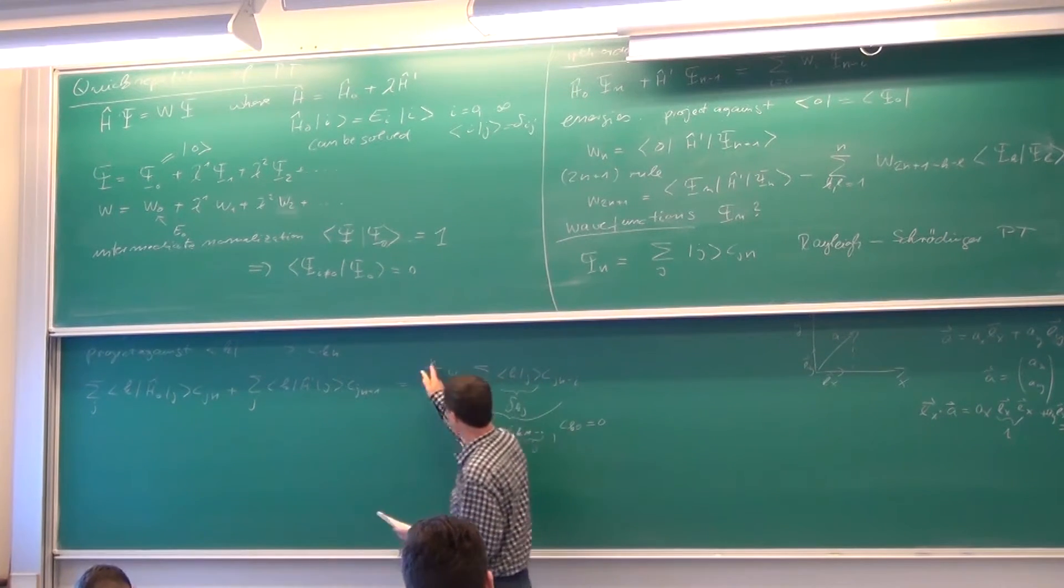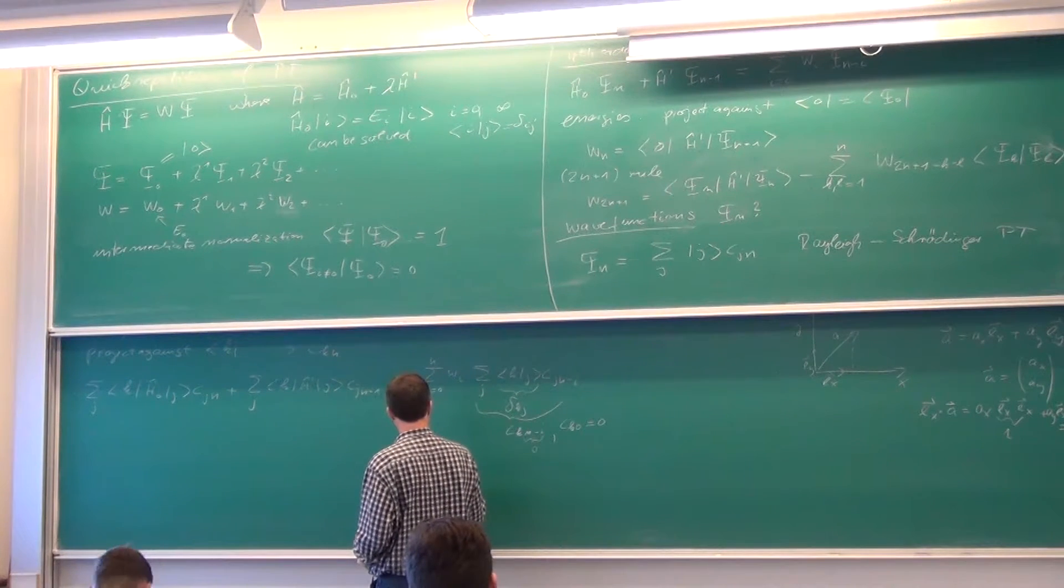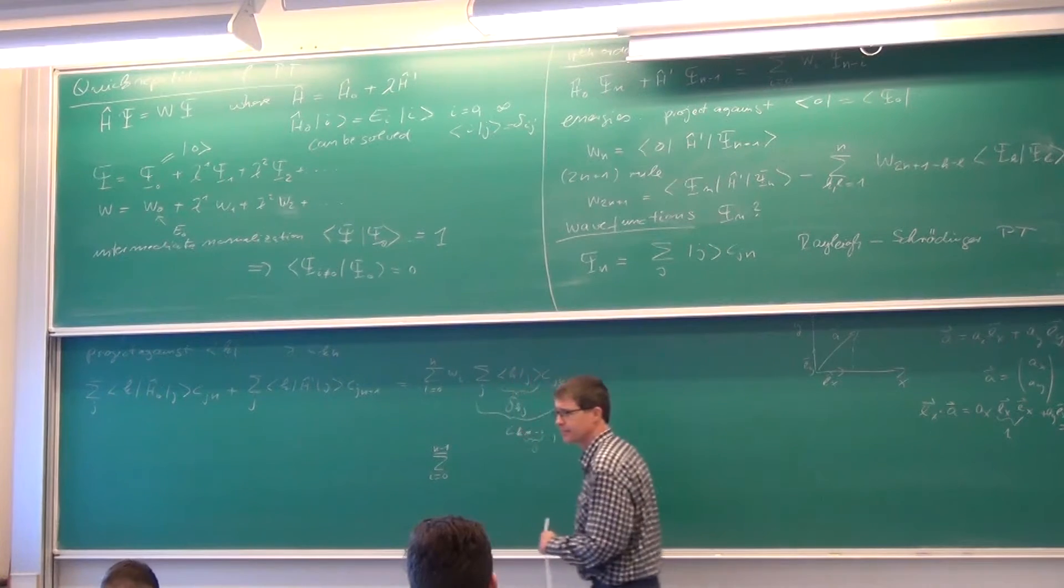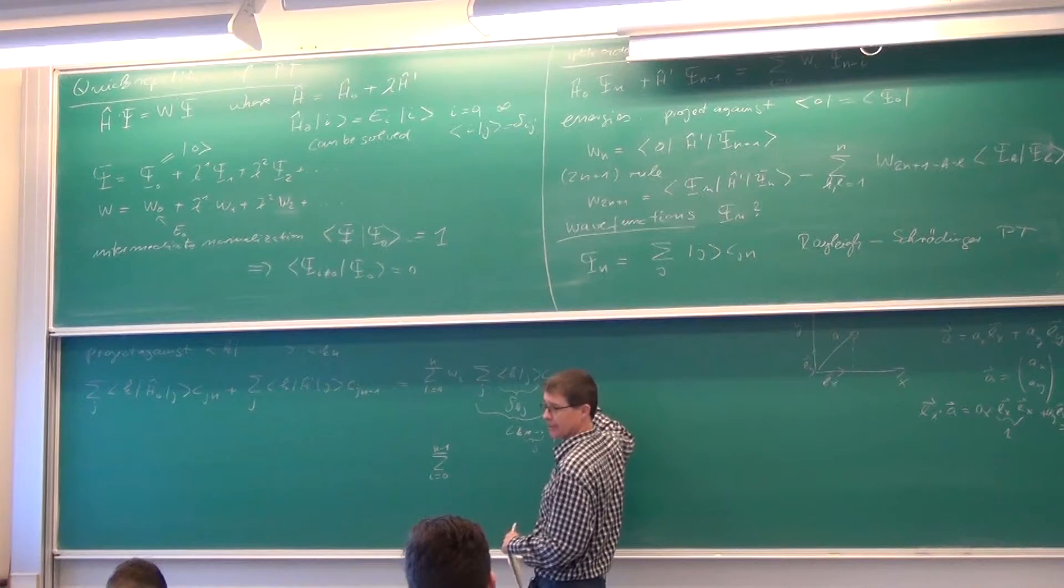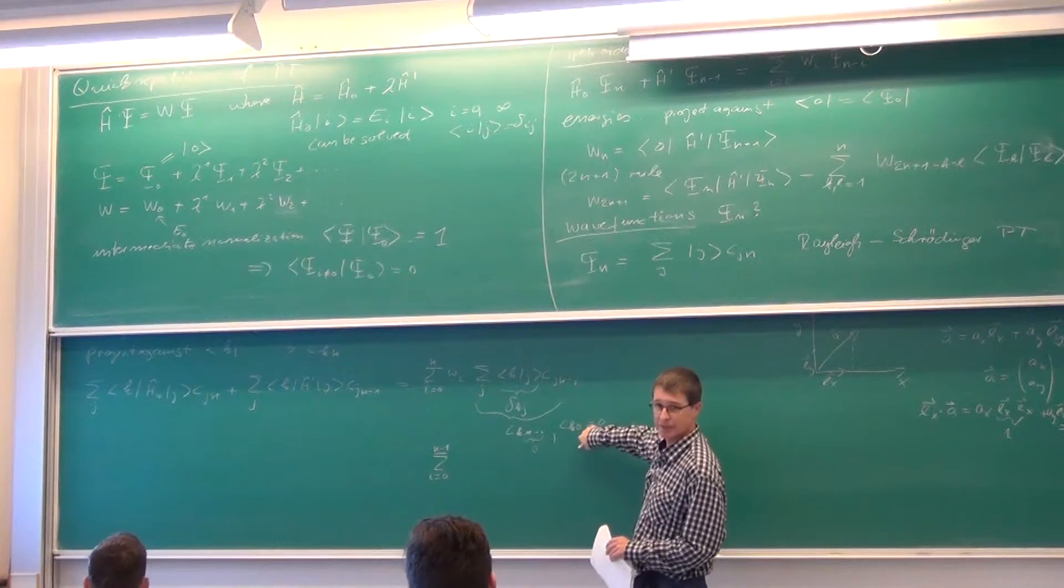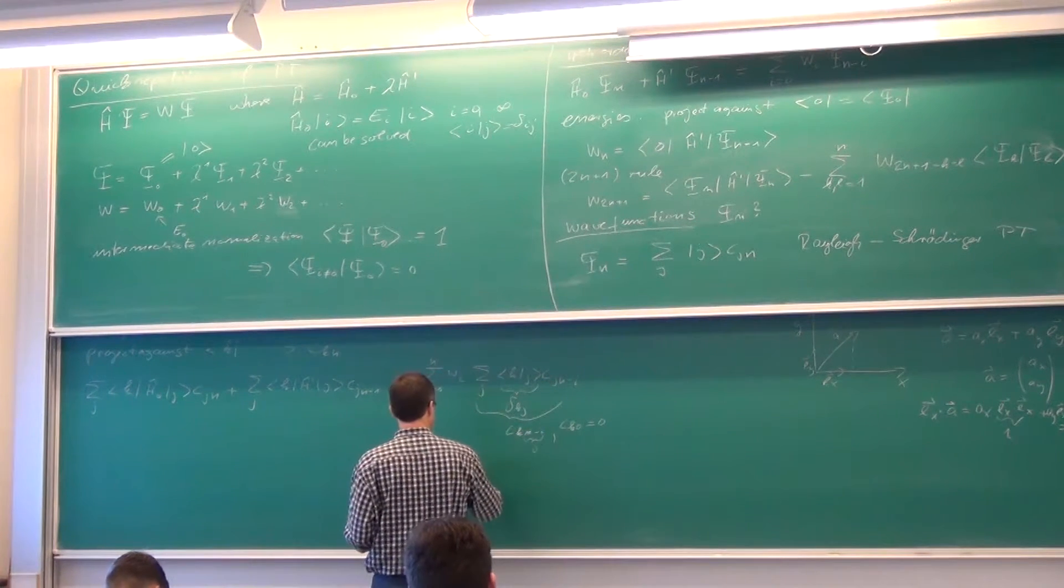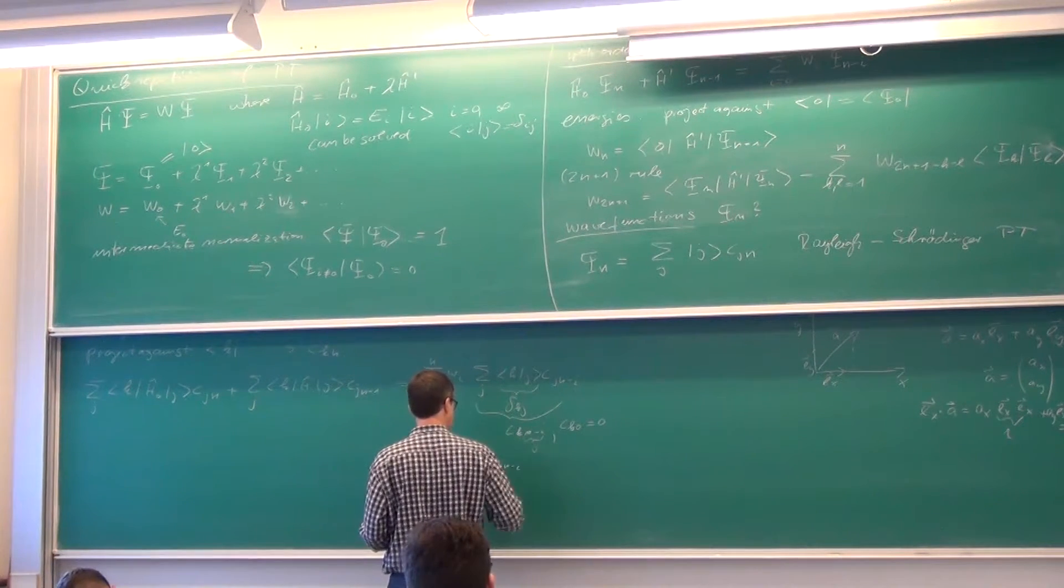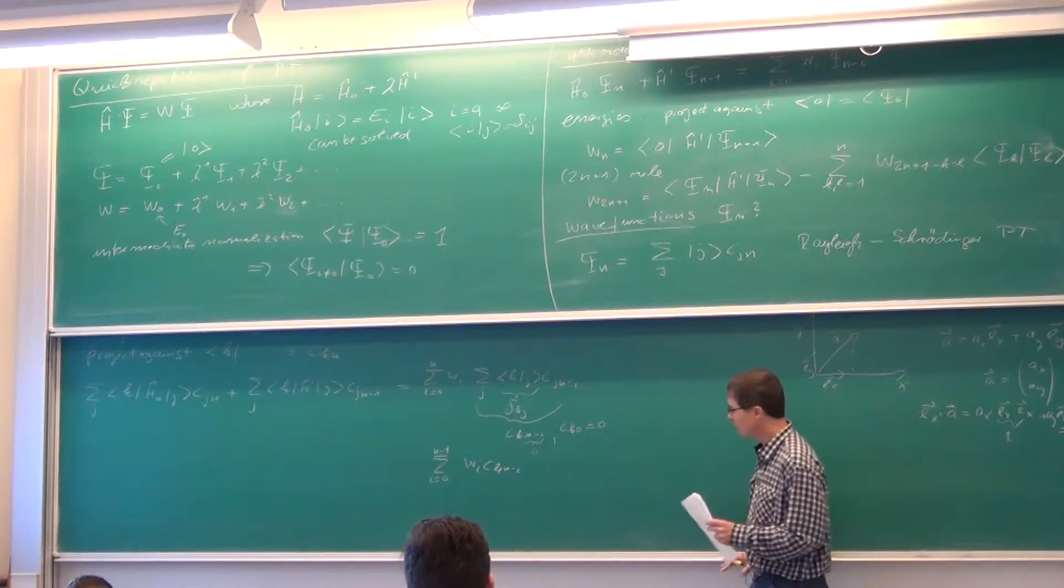That's just one of the basis vectors. So, in addition to this, we also have that c, k, 0th order is 0. And, that means that we get from all this, that we only get the sum over i equals to 0 up to n minus 1. Because, the nth order energy would go with the 0th order wave function correction. But, that is 0 because of this one. So, we have standing there, wi, c, k, n minus i's order. On the right-hand side.